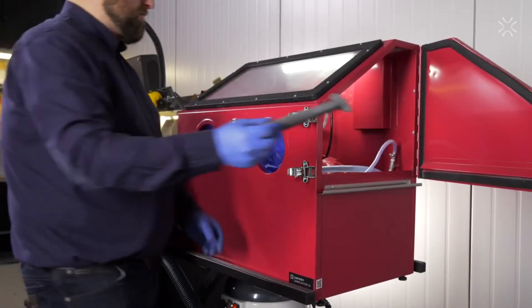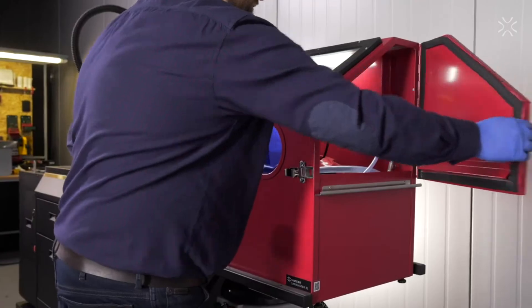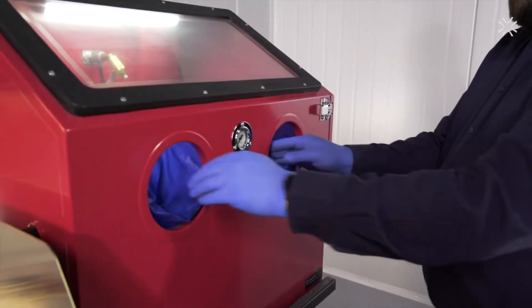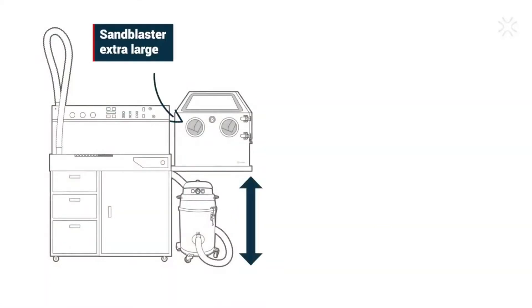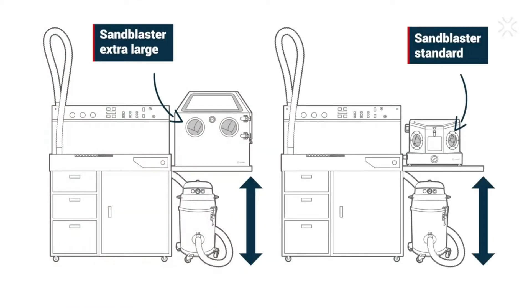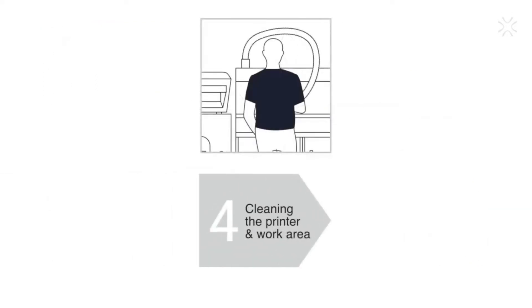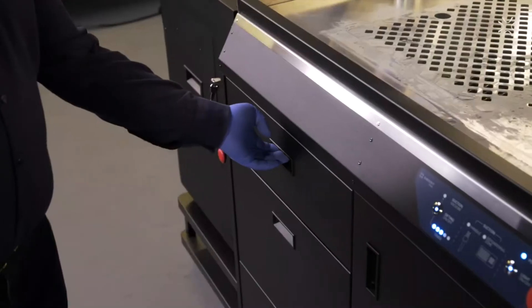To polish your diamond, that is to blast your printout, simply use the sandblaster located on the right side of the PHS. We recommend the extra-large model, but the PHS is also compatible with the standard sandblaster.